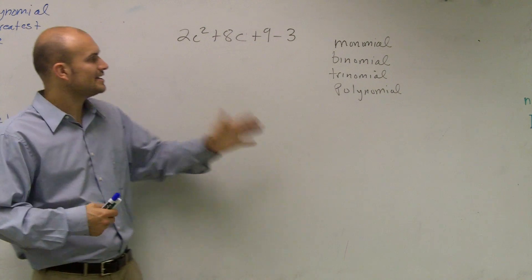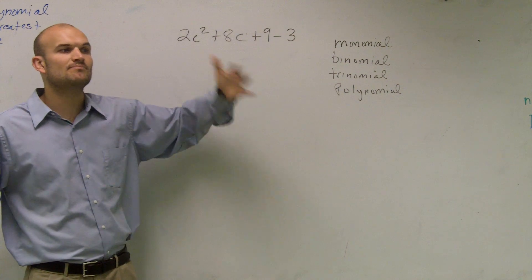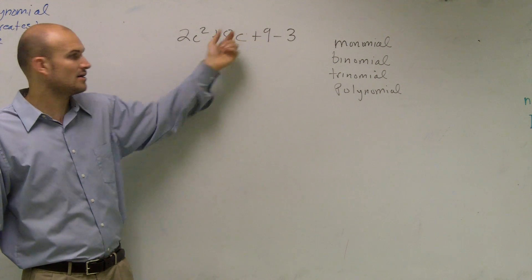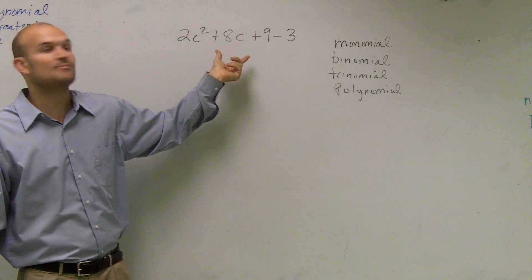But we've got to be careful. We always want to look to see, can we combine like terms first? And since this is c squared and this is a c to the first power, these are not like terms, so I cannot combine them.